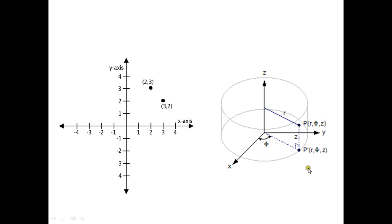Another coordinate system is the cylindrical coordinate system. This cylindrical coordinate system is very important for projections in GIS, so I'm going to give it strong emphasis. These coordinate systems are represented by a cylinder.